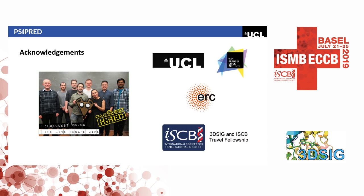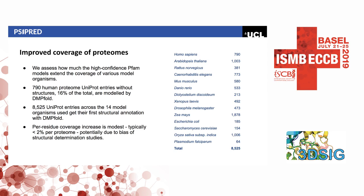Q: I noticed that in your Pfam tests you have cellular organisms — have you tried DMPfold on viral sequences? Viruses, especially bacteriophages, have extremely divergent sequences. A: We haven't studied it at a whole-organism or whole-viral level, though there were significant viral structures in the last CASP where we did okay. The quality of the alignment is key, so as long as you can get a deep alignment you can produce models.